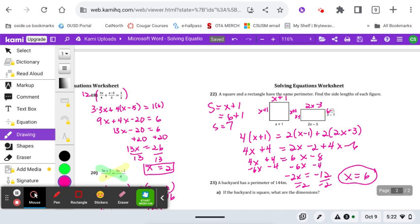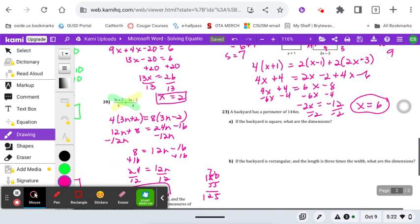Over here, it's 6 minus 1. So this would be 5, this would be 5, and then it's 2x minus 3. This would be 9, and this would be 9. There's our actual side lengths after we plugged that 6 back in.